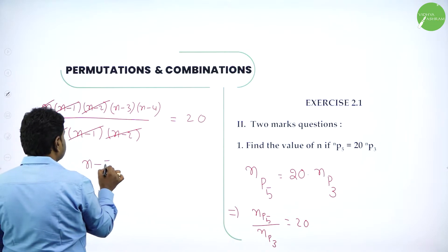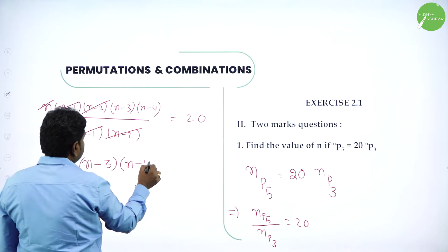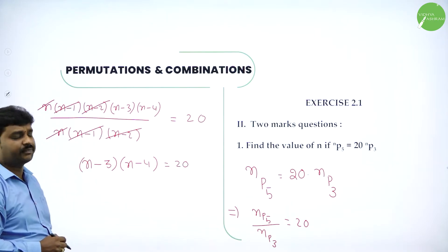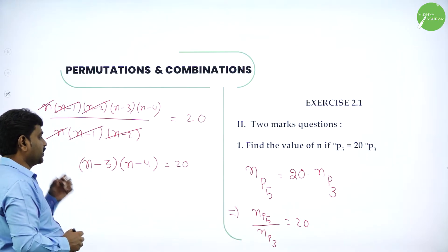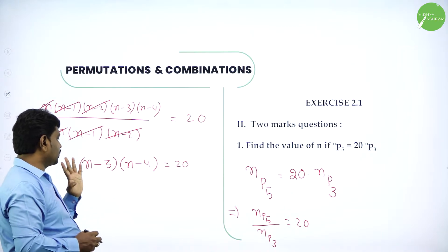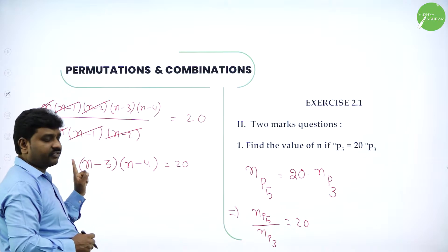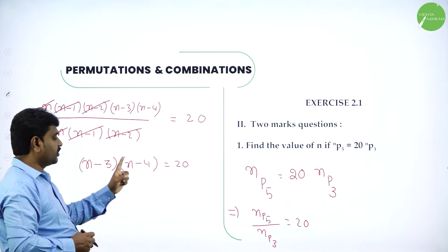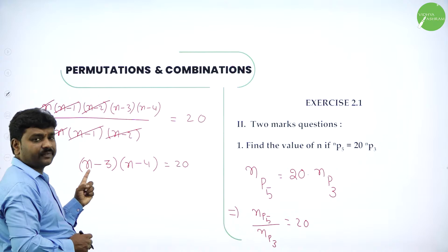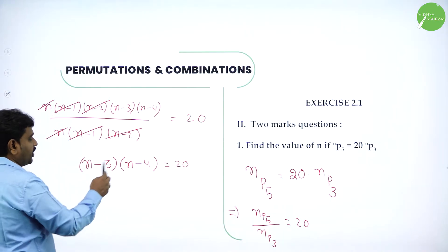We are left with N minus 3 into N minus 4 equals 20. Now you can solve this as a quadratic equation or you can do inspection. You cannot take N equals 3 because it will become 0. You can't take N equals 4 also. Start N with 5.